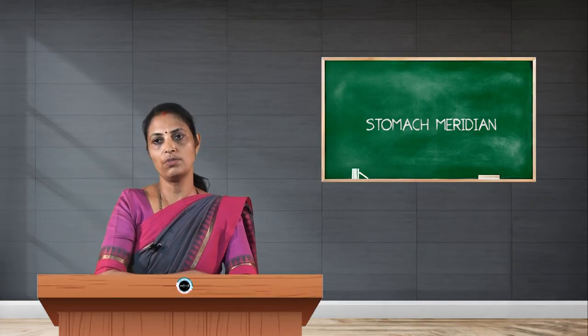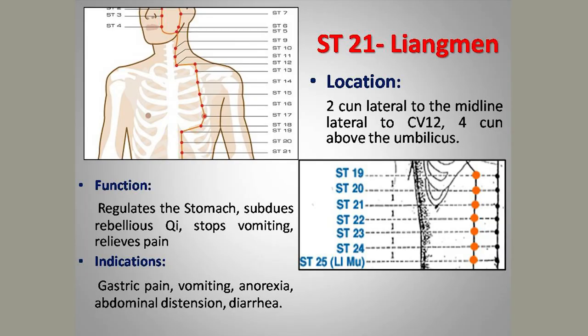Stomach 21, Liangmen, is considered partially dangerous — the right side Liangmen is dangerous. Its location is 2 cun lateral to the midline and 4 cun above the umbilicus. The reason it is dangerous is that this point lies over the gallbladder, so deep and perpendicular needling should be avoided.